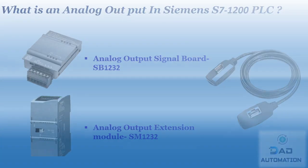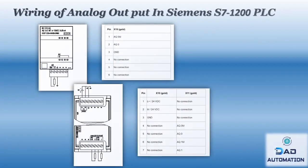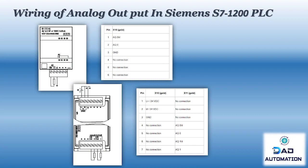Wiring of analog output in Siemens S7-1200 PLC: signal board SB1232 and extension module SM1232 are both connected to analog passive devices in the same way with two wires. Data sheets can be downloaded from the Siemens website for both types of modules, so complete wiring details can be found as shown in the window.